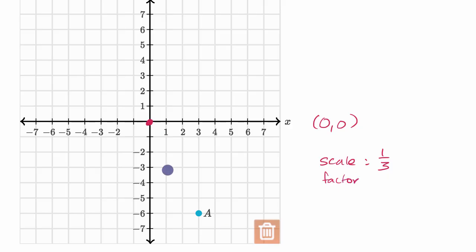So how do we do this? Well here, however far A is from the origin, we now want to be in the same direction but one-third as far. So one way to think about it, to go from the origin to A, you have to go six down and three to the right.